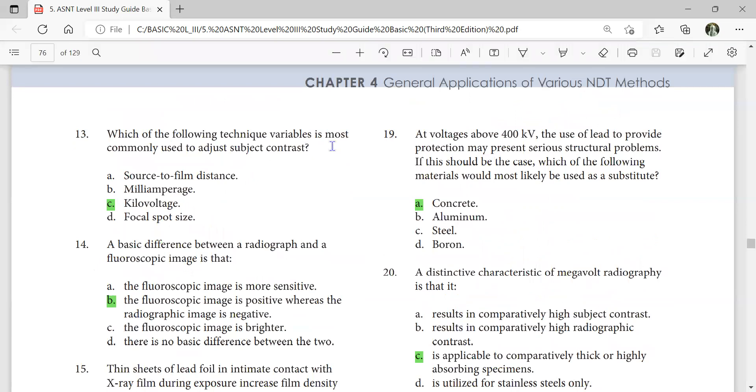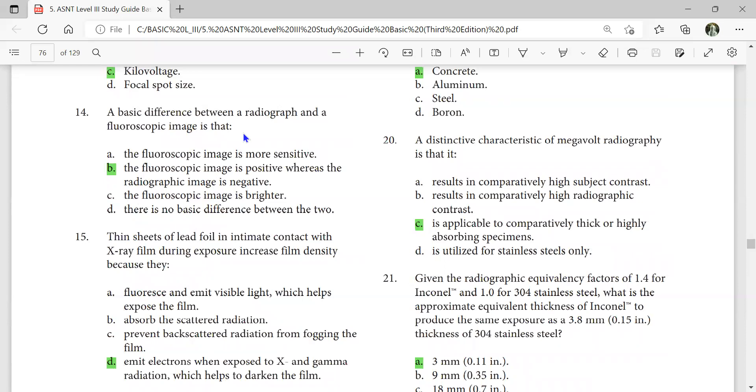Which of the following technique variables is most commonly used to adjust subject contrast? Kilovoltage. The basic difference between a radiograph and fluoroscopic image is that the fluoroscopic image is positive whereas the radiographic image is negative. A voltage of 400 kV used requires use of lead to provide protection, which may present serious structural problems. Which of the following materials most likely to use? Polyosubstitute concrete.